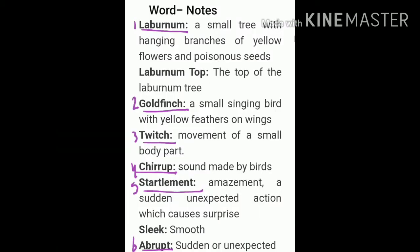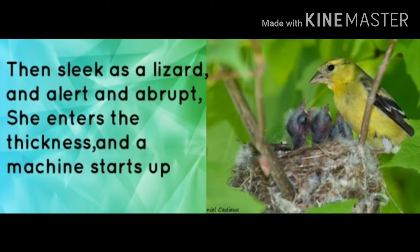Now pay attention to the difficult words used in this stanza. Twitching means sudden jerk movement. Chirrup is the word used for repeated high-pitched sounds made by birds. Startlement means feeling or showing sudden shock. Abrupt means rapid. Chitterings is a word used for chattering sound. Tremor of wings means involuntary vibration of the wings. Trillings is a sound word used to produce a chirping sound. Trambles means vibration or to shake. And thrills means a sudden feeling of excitement.